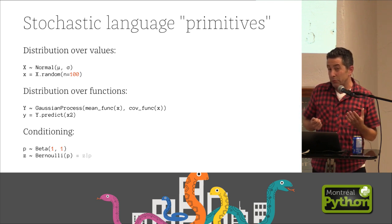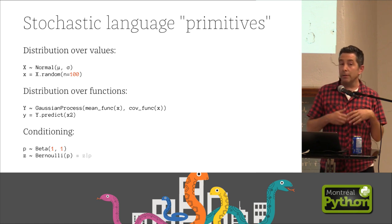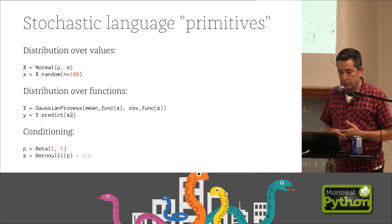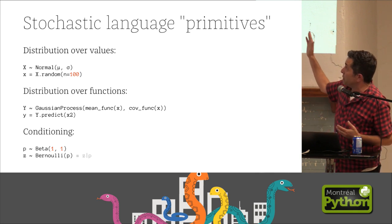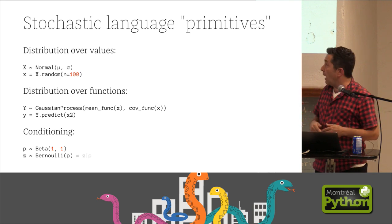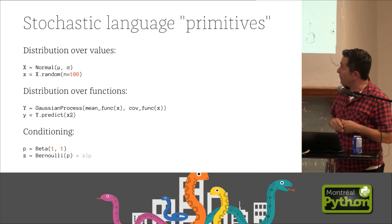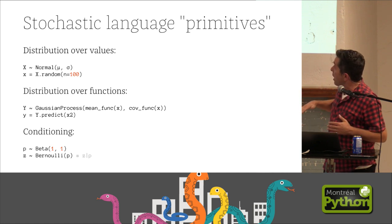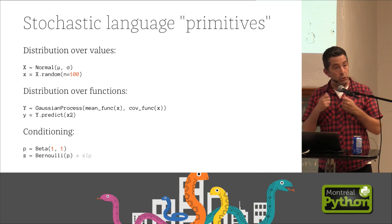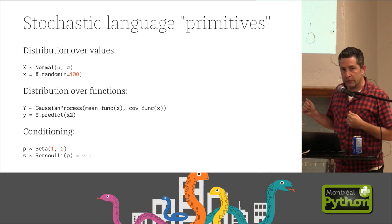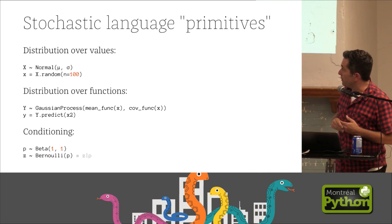And with these primitives, you're able to do things like draw random numbers, calculate probabilities given those random quantities. You can have distributions over values, so something normally distributed, bell curve, and draw random numbers from that. You can do more complicated things like having distributions over functions.